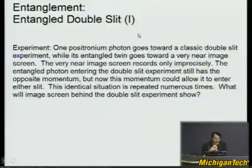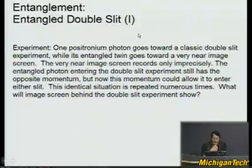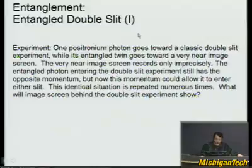Let's start off. I like to go with experiments because they're somewhat unambiguous — the experiment says this or that, and you can build your understanding based on experiments. So these two experiments I'm pretty sure I know the answer to, but I don't know if they've been done in detail. You have one positronium photon — if you don't know what positronium is, go back to last lecture.